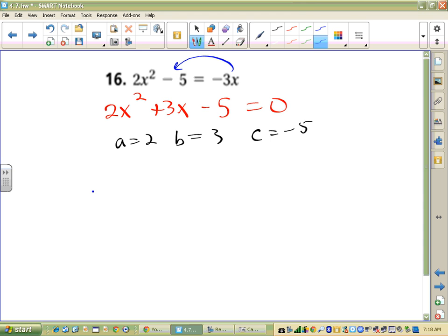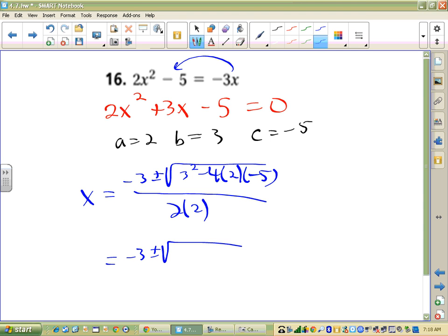So what I get then is that x is negative 3 plus or minus the square root of 3 squared minus 4 times 2 times negative 5. And that ends up being divided by 2 times 2. So I get negative 3 plus or minus the square root of 9 plus 40 all over 4.